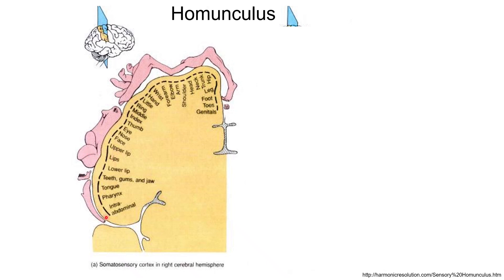The tongue also has a lot of area because it has a lot of touch receptors. This mapping from body parts to the somatosensory cortex is called the somatosensory homunculus.